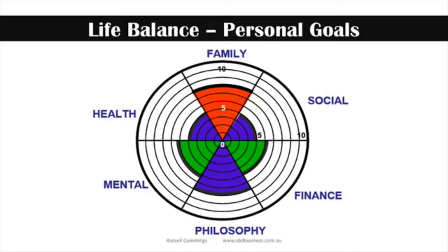The life balance model talks about family, social — which is friends, colleagues and those sorts of things — personal finance, your philosophy and spiritual nature, your mental well-being and personal development, and then your health and fitness. In the example here I've chosen one objective around health, but you might want to pick others. You don't have to have an objective for every area — pick the ones that are most important to you.